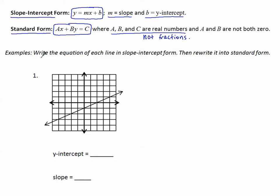Let's look at some examples. Write the equation of each line in slope-intercept form, then rewrite it into standard form, Ax plus By equals C. If we're going to write it into slope-intercept form, the two things we need are b, the y-intercept, and m, the slope.